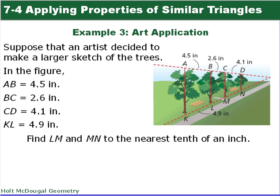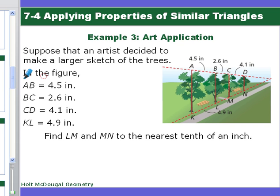So we are going to use these theorems. First one says suppose an artist decided to make a larger sketch of the trees. Of course they would. And it tells us AB is 4.5, BC is 2.6, CD is 4.1, and KL is 4.9. It wants us to find LM. You can't really see that very well, can you? It wants us to find LM and MN. So those two segments.